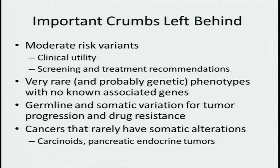We also wanted to give a nod to the very important crumbs that are left behind, which you heard about in David's talk. We'll be facing even more of these moderate risk variants. What do they mean for clinical utility? How do we screen? How do we treat? Dare we use it as a predictive test, whether it's negative? And then there's the situation where something is wrong genetically — it's a cancer genetic syndrome — but we can't find a mutation in the usual suspects.